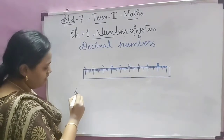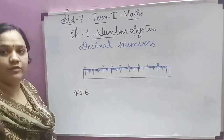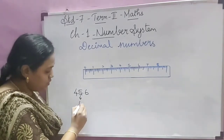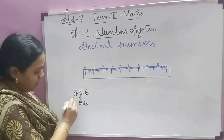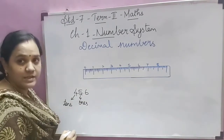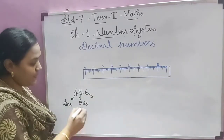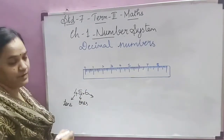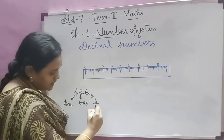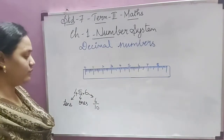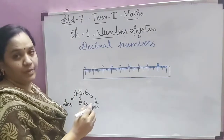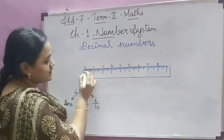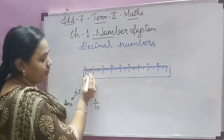For example, take the decimal number 45.6. Here the place value of 5 is ones place and 4 is in tens place. This 6 is after the point — it is a decimal digit. So 6 is the 6/10th part. For example, if I want to mark 0.6 on a scale, we go 0.1, 0.2, 0.3, 0.4, 0.5, 0.6.